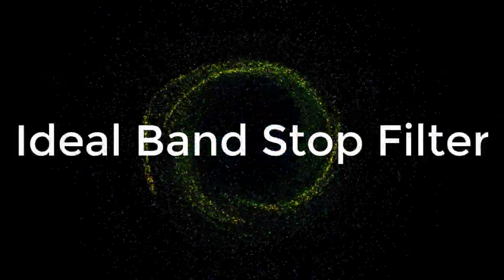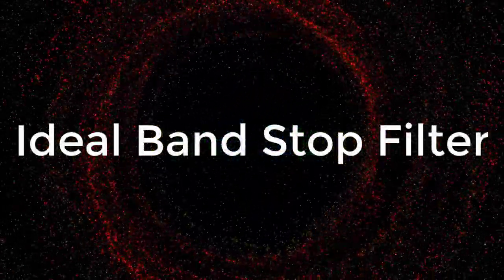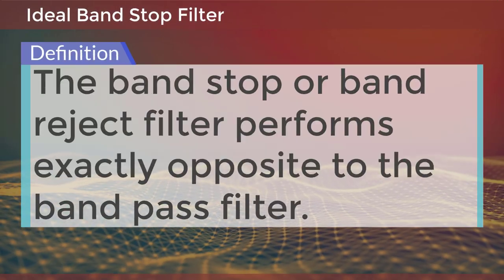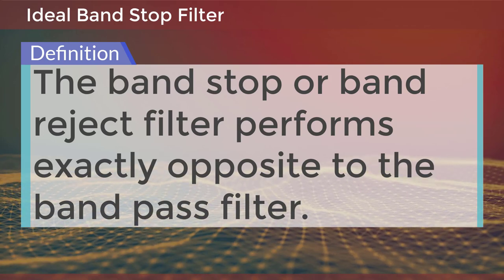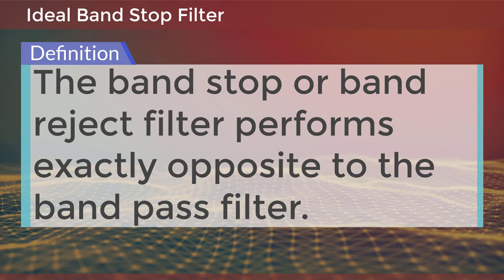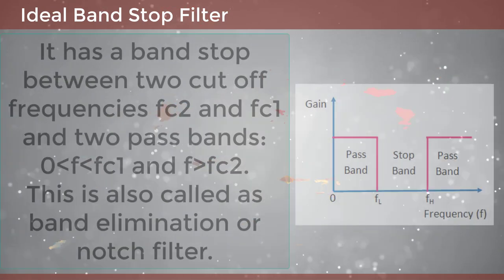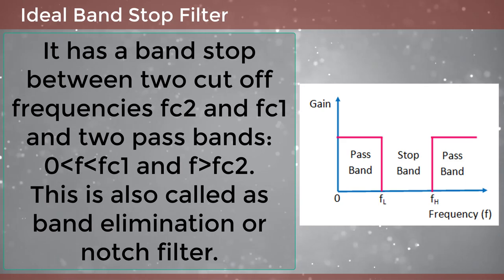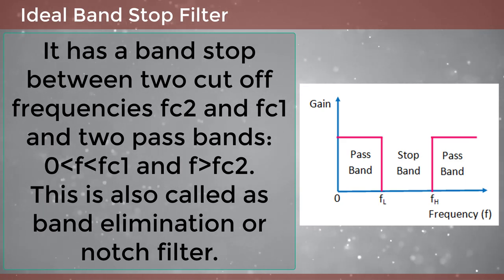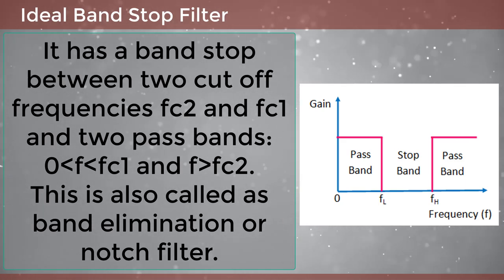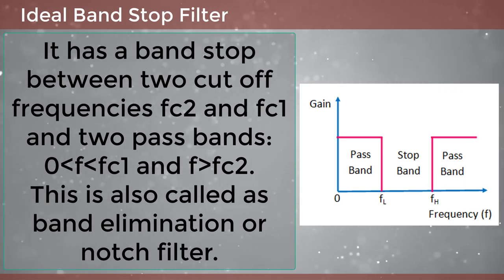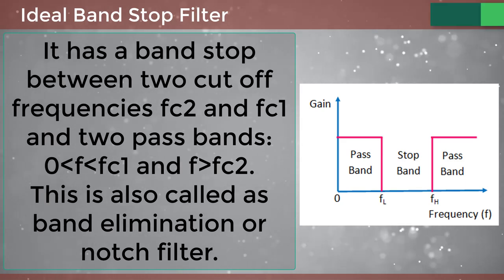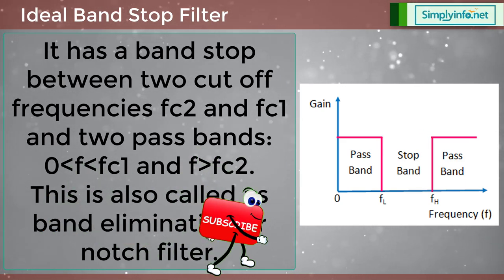Now the last type: the ideal band stop filter. The band stop or band reject filter performs exactly opposite to the band pass filter. It has a stop band between two cutoff frequencies FC2 and FC1, and two pass bands: 0 to FC1 and above FC2. This is also called a band eliminator or notch filter.